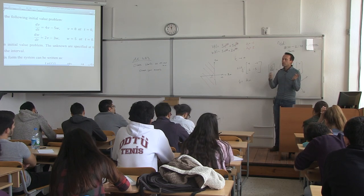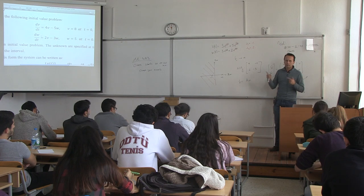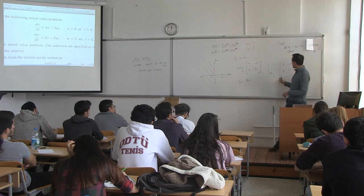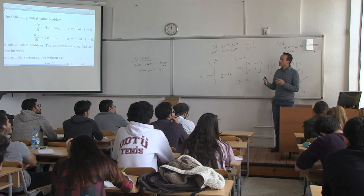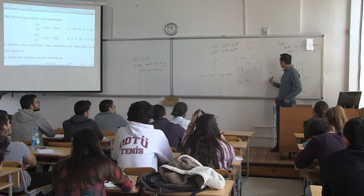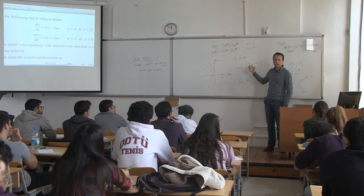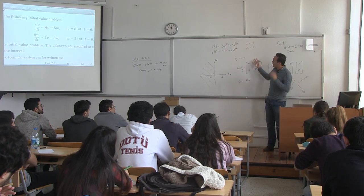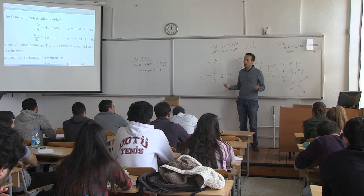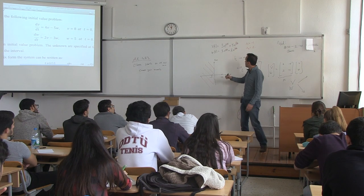If you go back to flight dynamics lectures on YouTube, you will see that the solution of the A matrix and the solution of the characteristic equation are actually the same. When you look at eigenvalues, you are looking at the roots of the characteristic equation of this linear system. So all eigenvalues must be on the left half of the complex plane to have a stable system; even one on the right side makes it unstable.